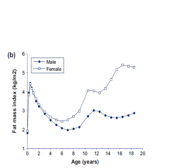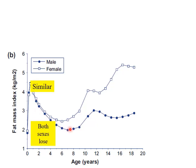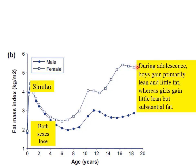The two sexes have different amounts of fat and different metabolism. Looking at fat mass typically in males and females as they age: in childhood both sexes lose fat mass initially, but as they reach puberty, females diverge and acquire a greater relative fat mass.